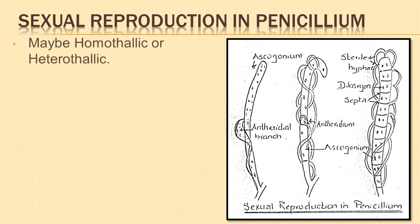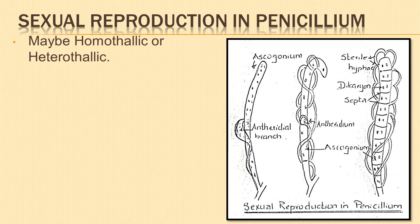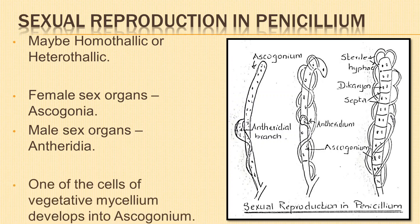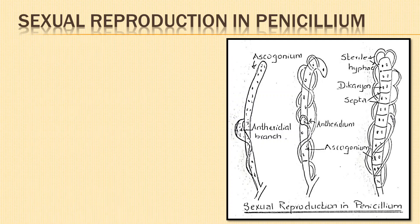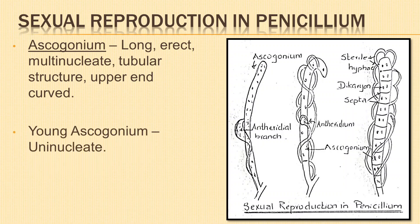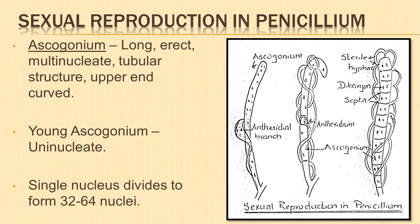Let us understand the process of sexual reproduction in penicillium. Penicillium may be homothalic, where both antheridia and ascogonia are born on the same mycelium, or it may be heterothalic, where both male and female sex organs are born on different thalli. The female sex organs are known as ascogonia and the male sex organs are known as antheridia. One of the cells of the vegetative mycelium develops into ascogonium. The mature ascogonium is long, erect, multinucleate tubular structure with its upper end curved. When young, ascogonium is uninucleate. As it elongates, the single nucleus divides repeatedly to form 32 to 64 nuclei.